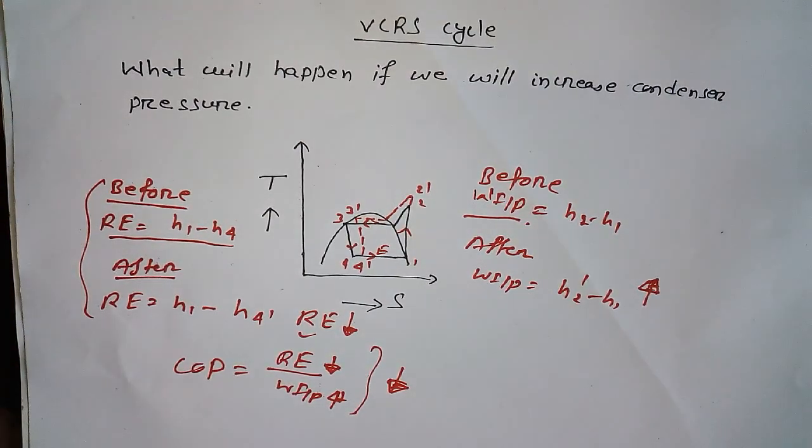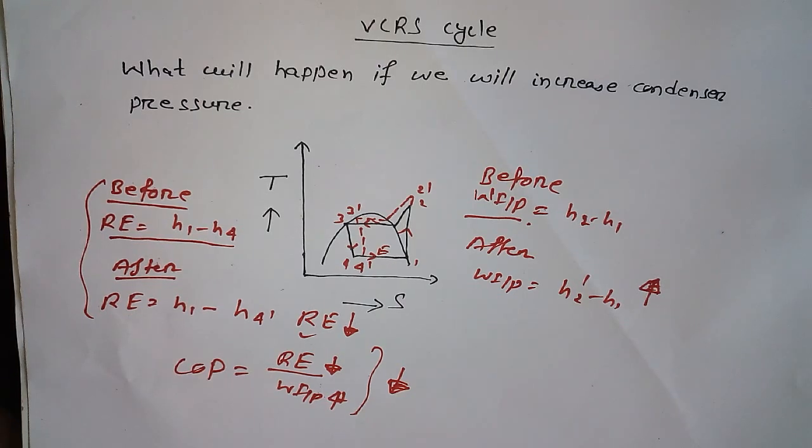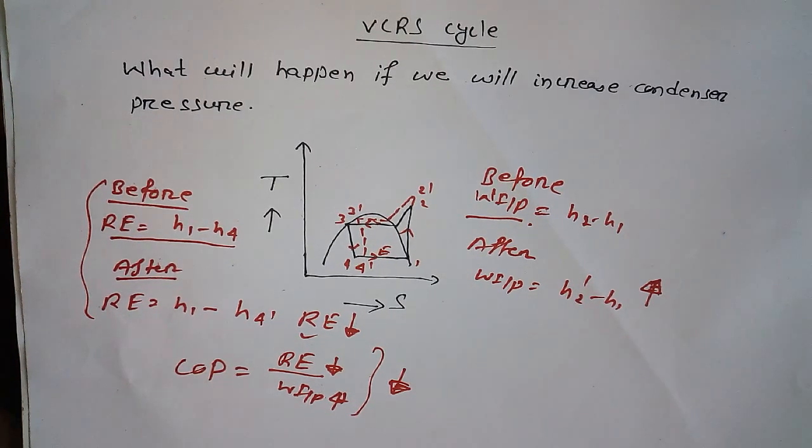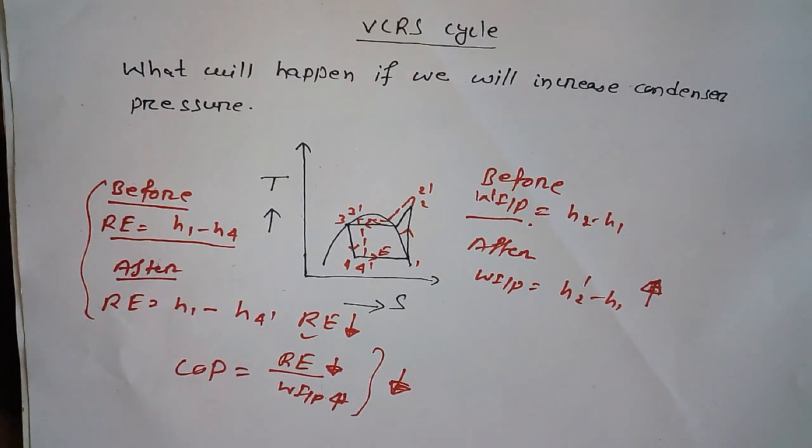So far we have seen three parameters. Refrigerant effect is decreasing, work input is increasing, and COP is decreasing. Let's go to another parameter.